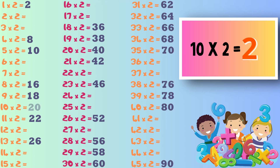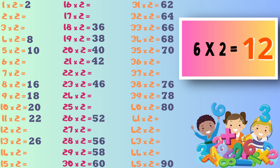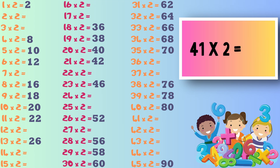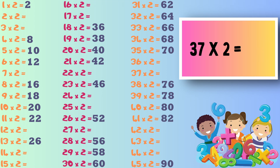Next we have 10 times 2, the answer is 20. Next we have 6 times 2, and the answer is 12. Next it's 41 times 2, the answer is 82.